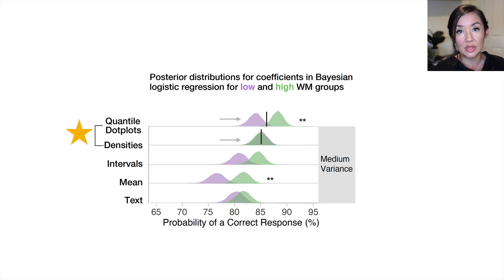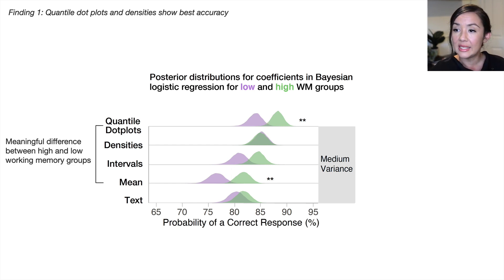The next thing I want to point out is that there is a meaningful difference between high and low working memory groups for the quantile dot plots and for the means. Now I want to call your attention to this right here. For people who had high working memory capacity that viewed quantile dot plots, their performance was the best compared to all the other iterations of this experiment. They were even better than people who had high working memory capacity who viewed density plots. This is suggesting that when you have high working memory capacity, you can capitalize on the additional frequency information provided in those quantile dot plots.